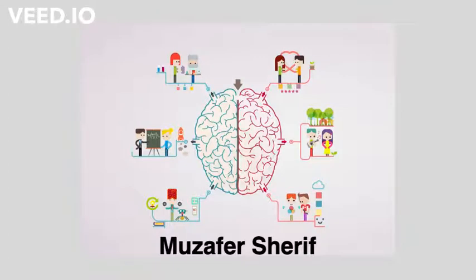Sherif began his work on his social psychological theory of social perception based on Gestalt principles. He particularly influenced how to use the experimental method to demonstrate social phenomena such as norms and cohesion.